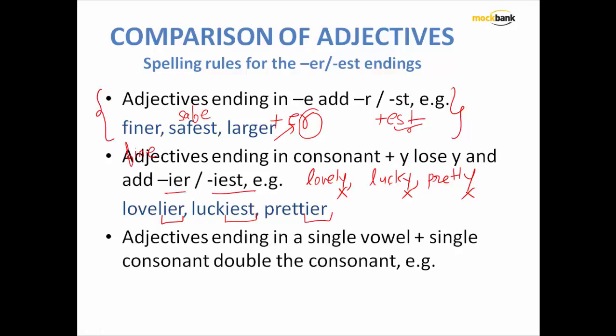Now the third is adjectives ending in a single vowel plus single consonant double the consonant. What is the meaning? For example, I have got fit. Fit ends with a consonant and the second last alphabet is 'i', that is a vowel. How about sad? It ends with a consonant but the second last alphabet is 'a', that is a vowel. How about thin? N is a consonant and the second last alphabet is 'i', that is a vowel. How about wet? And this is hot.